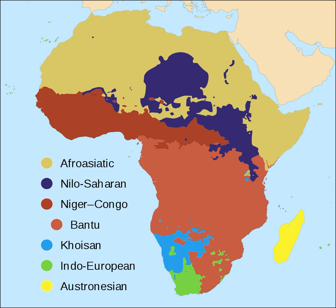The three small Khoisan families of southern Africa have not been shown to be closely related to any other major language family. In addition, there are various other families that have not been demonstrated to belong to one of these larger families. Mande includes some 70 languages, including the major languages of Mali and Guinea — these are generally thought to be divergent Niger-Congo, but debate persists. Ubangian includes some 70 languages centered on the Central African Republic, and may be Niger-Congo.